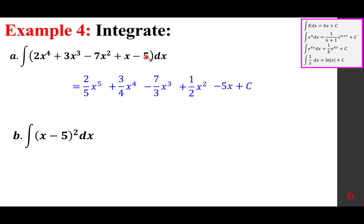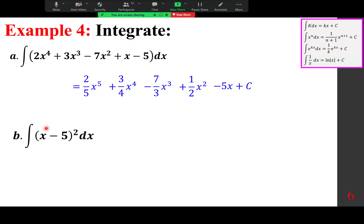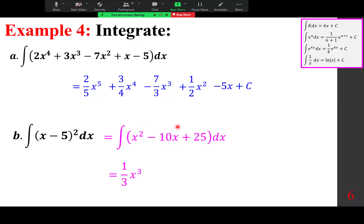For the integral of (x − 5 cos x)² dx, first expand: (x − 5)² = x² − 10x + 25. Integrate term by term: (1/3)x³ − 5x² + 25x plus a constant.